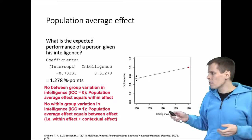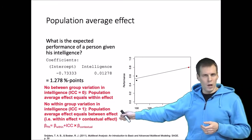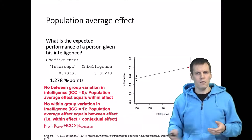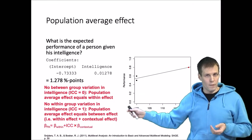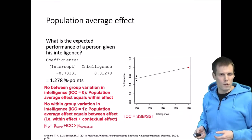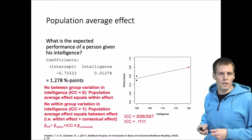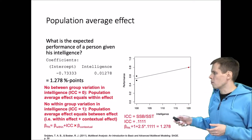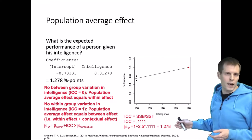How about in between? It can be proven — and Snijders' chapter proves this — that the population average effect is the within effect multiplied by the intraclass correlation of the explanatory variable, plus the regression coefficient for the contextual effect. So when the ICC is 0, we simply have the within effect; when the ICC is 1, we have the between effect. We can verify this: the ICC is the sum of squares between divided by sum of squares total — about 11% here — and plugging into the formula gives 1.278, which matches what we got from the regression analysis.